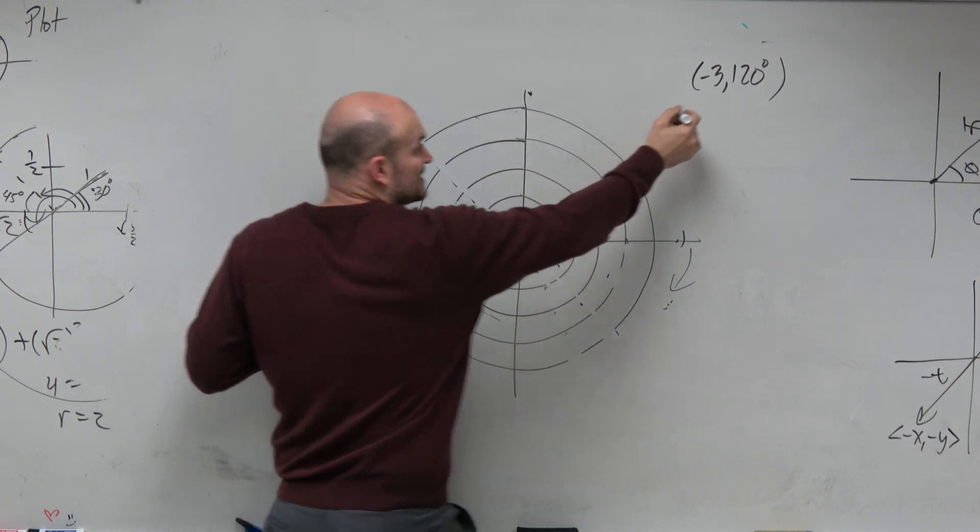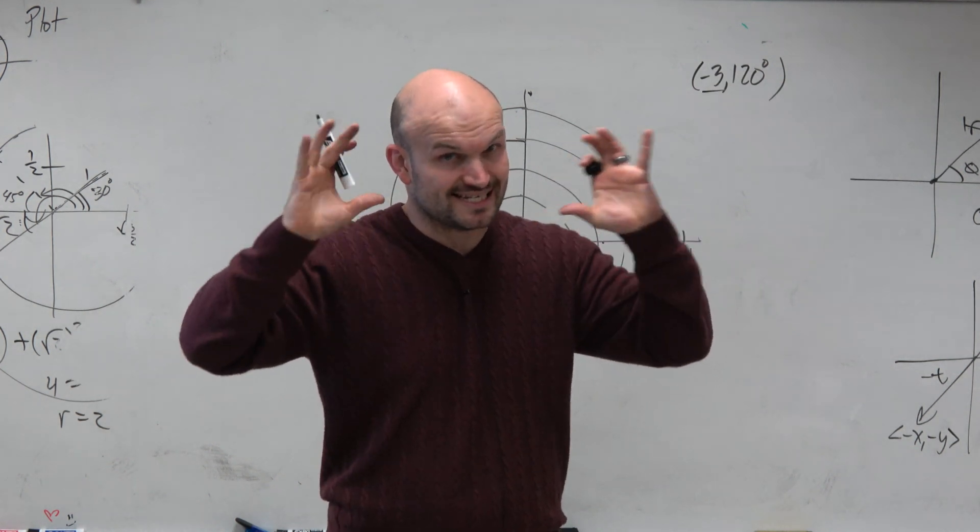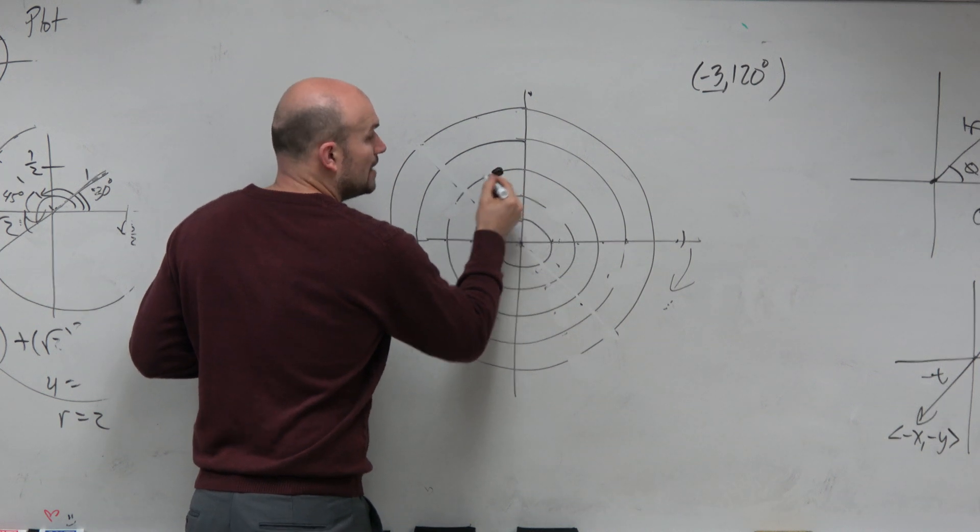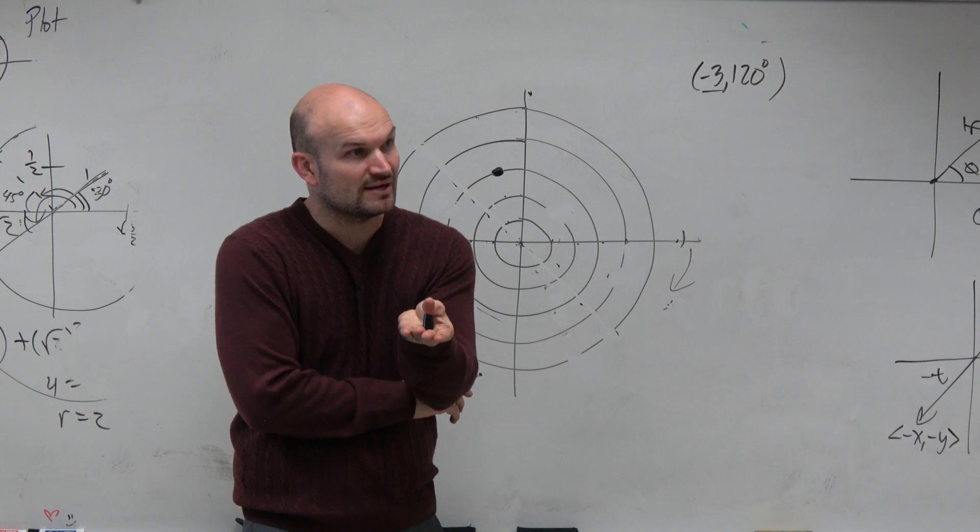So it's 3. Remember, this is a direct distance. So forget about the direction for a second. Just think distance. Distance is 3, at 120. 120, 1, 2, 3. But now we need to think about that directed portion. And this is what I was telling you. Now it comes into play.